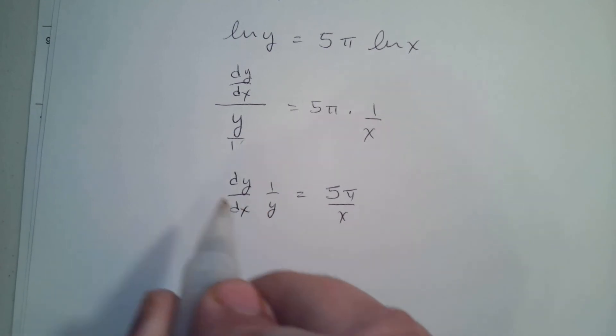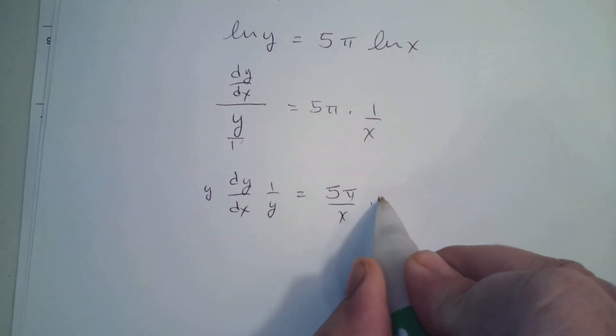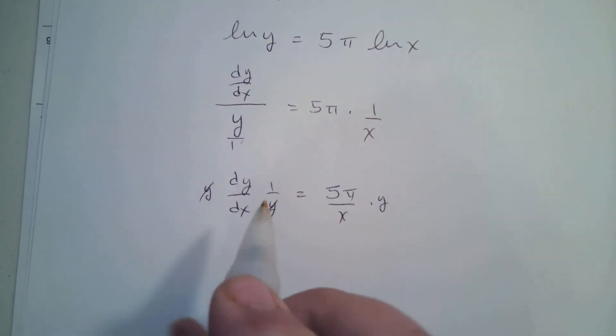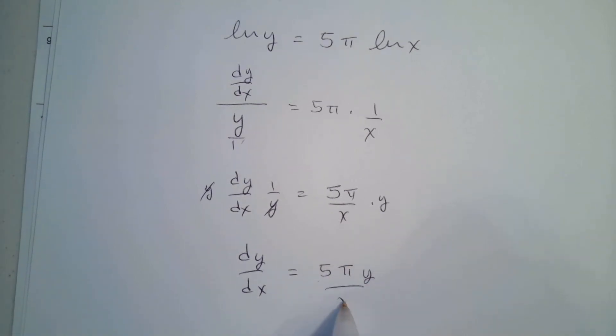Now I multiply both sides by y. So dy/dx is equal to 5π y over x.